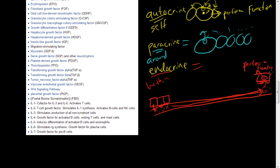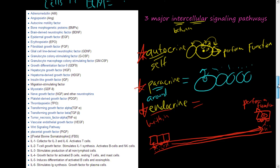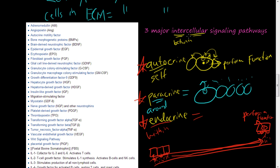So that's autocrine, paracrine, and endocrine - these are examples of intercellular signaling pathways.